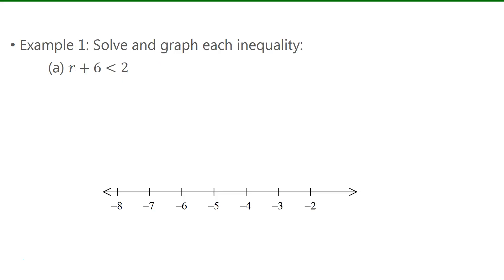Now in Example 1, we have to solve and then graph each inequality. So we have r plus 6 is less than 2. So to get rid of that plus 6, we'll subtract 6 from both sides, and we end up with r being less than negative 4. Now to graph that, we'll put a hollow circle around negative 4, since negative 4 is not actually included in the solution, and we're going to shade everything to the left of that.